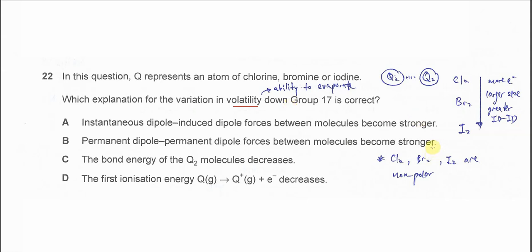First we need to know these halogens - chlorine, bromine, iodine - they are non-polar.